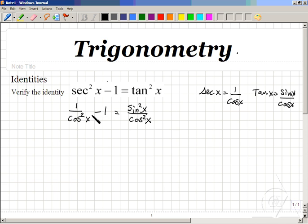In particular, on the left side, we can find common denominators. If we write 1 as 1 over 1, the common denominator between cosine squared and 1 would be cosine squared.